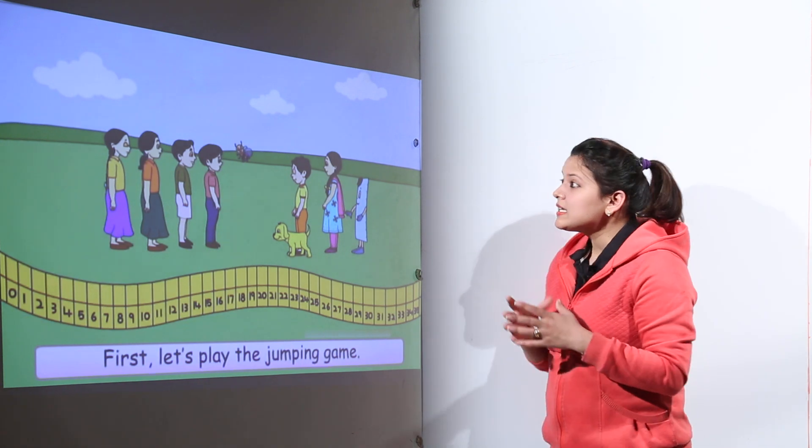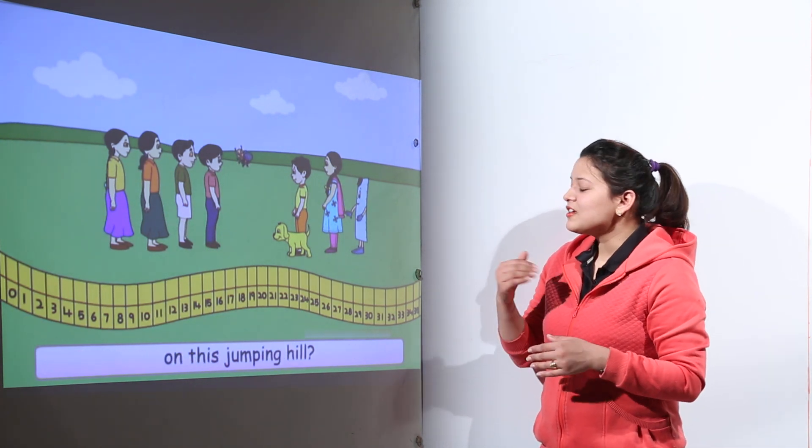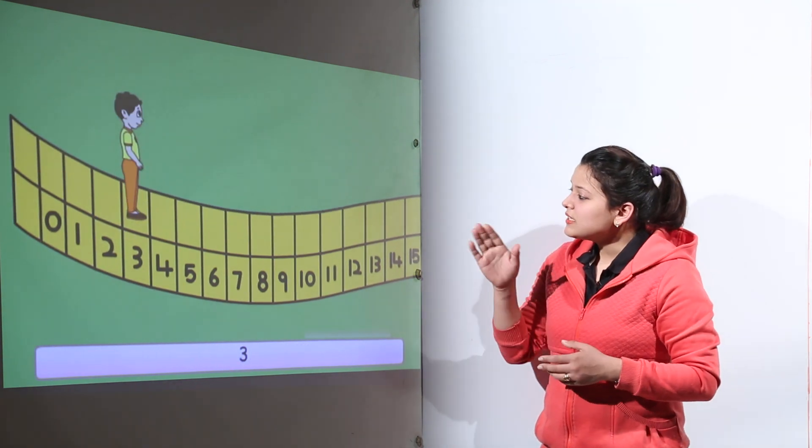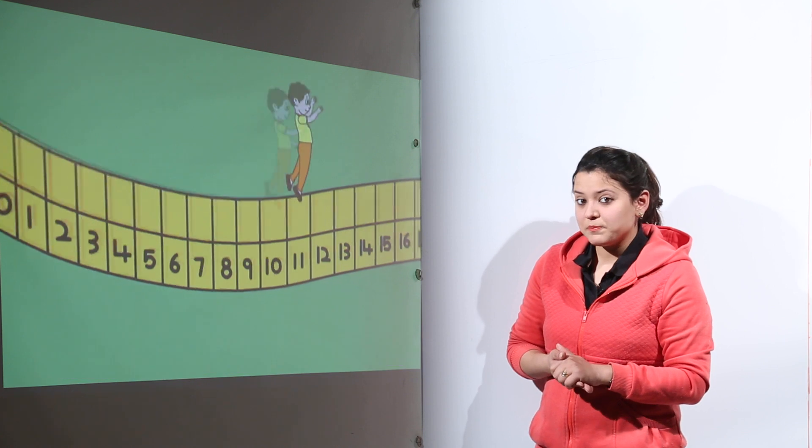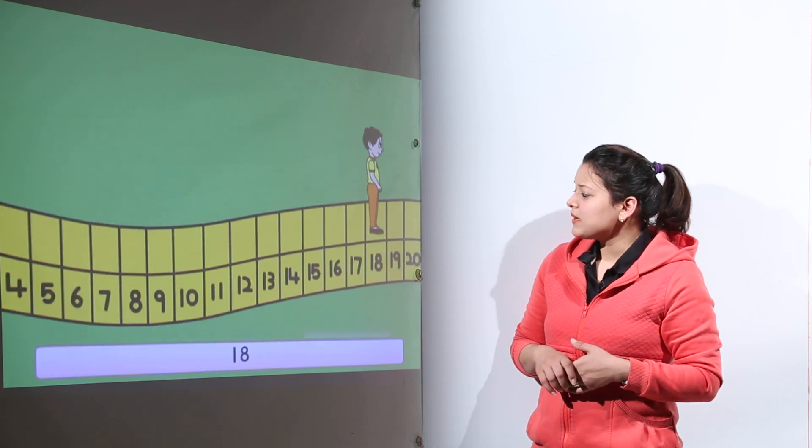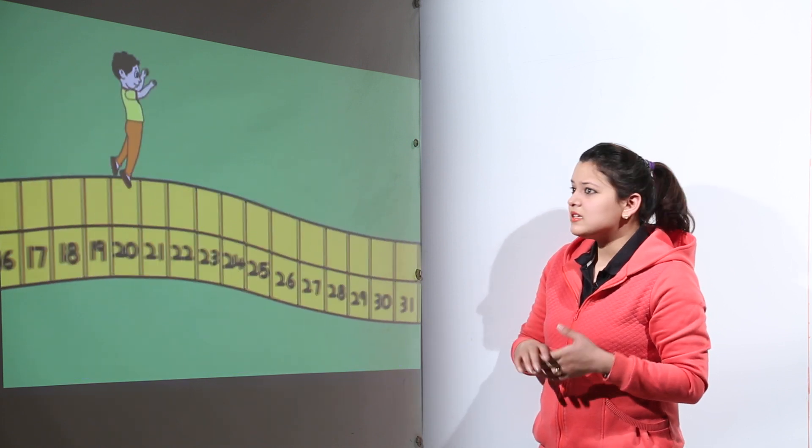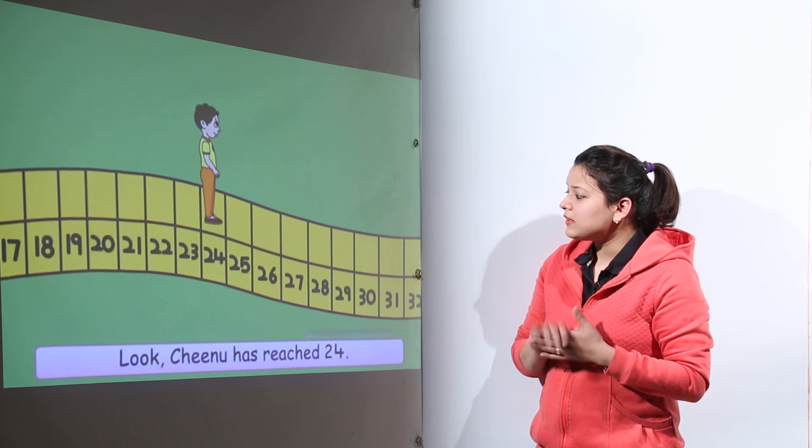Now you can see the kids are in the ground to play cricket. But they decided to play the jumping hill first. Now on this jumping hill, Chinu was asked to jump 3 steps at a time. Now you can see him jumping. Now after some time that is as you can see he is keep on jumping for some time. You would find that he stopped at a number 24.